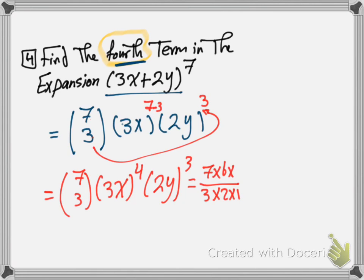7 times 6 times 5 multiplied by 3 to the power 4 and x to the power 4, and 2 to the power 3 and y to the power 3. Then, by using a calculator, we can find that it's equal to 35.